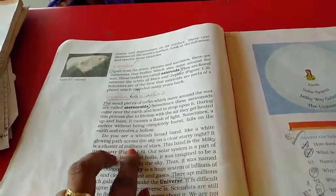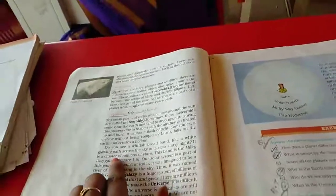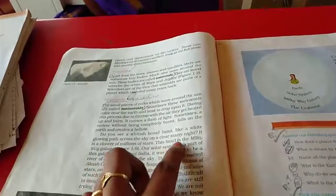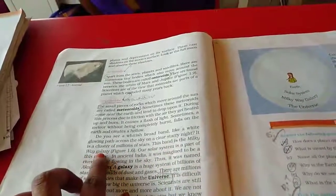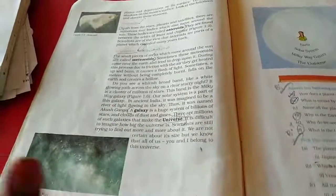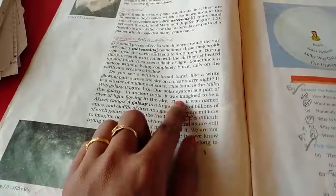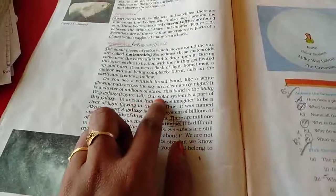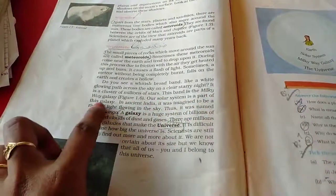How we have to say cluster of stars? Stars group name is Cluster. This band is a Milky Way Galaxy. What is the name? Milky Way Galaxy. Our solar system is a part of this galaxy.